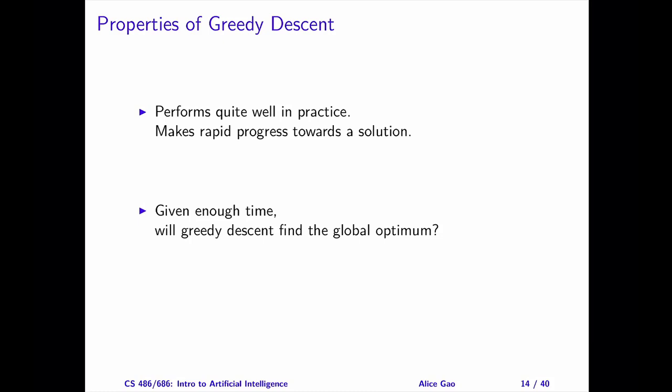For the second property, let's consider the following question. If Greedy Descent has unlimited time to explore the search space, is it guaranteed to find the global optimal solution? The global optimal means a state with the lowest cost among all the states in the search space. Pause the video and think about this question for a minute. Then, keep watching for the answer.